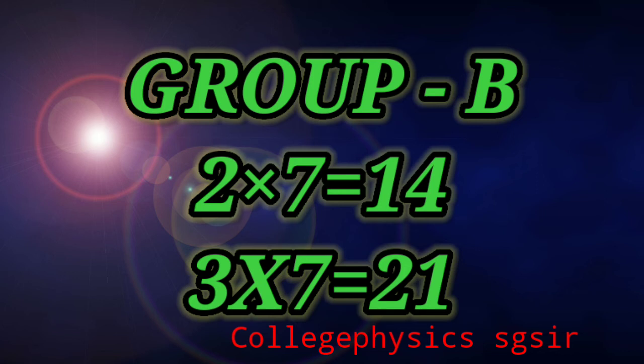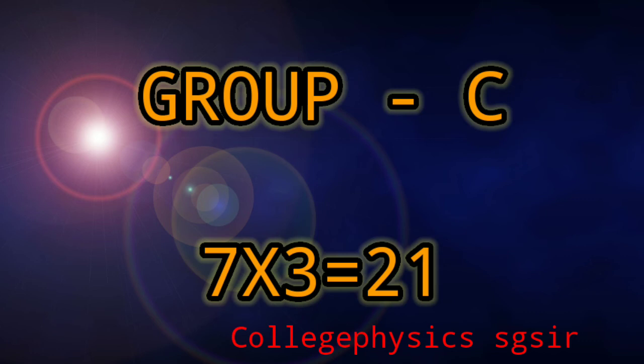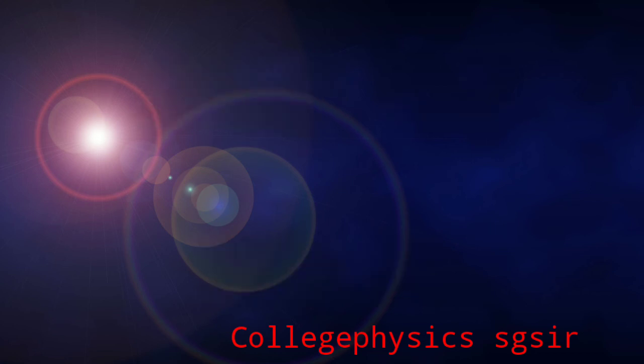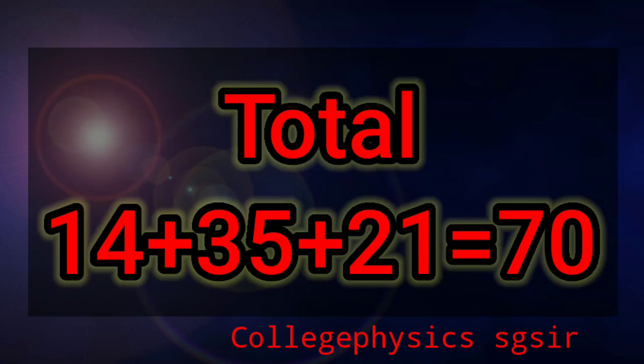In Group B, there are short questions: seven two-mark questions totalling 14 marks, and seven three-mark questions totalling 21 marks. Group C has mainly long questions — three questions each carrying seven marks, totalling 21 marks. Group A plus Group B plus Group C equals 70 marks, plus 30 marks for practicals, for a total of 100 marks.